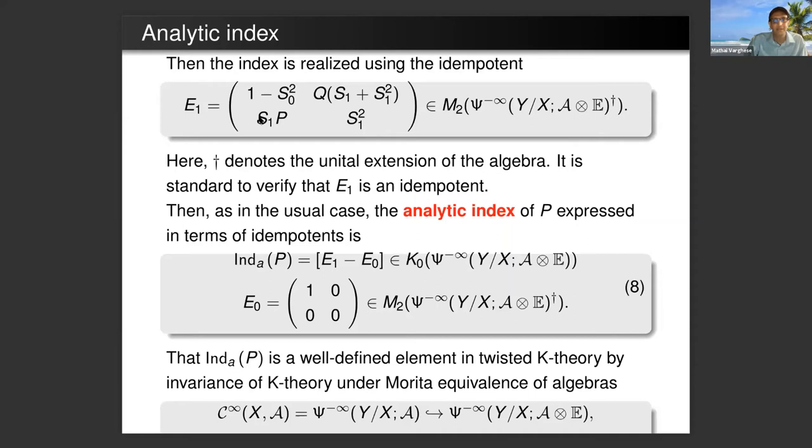The index is realized by using the following idempotent. You take 1-s_0 squared, so s_0 is the difference of 1-QP, and s_1 is the difference of 1-PQ. The off-diagonal terms are a little bit more complicated. It's a two by two matrix with values with entries in smoothing operators. The analytic index is defined in terms of e_1, this idempotent e_1 minus a kind of trivial idempotent which is one on this slot and zeros everywhere else.